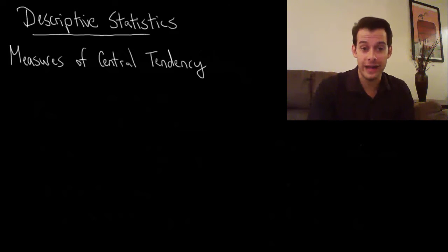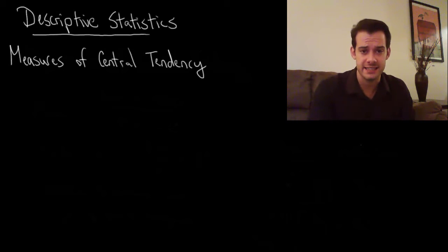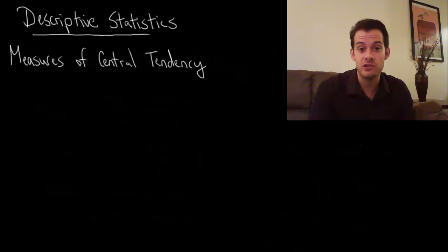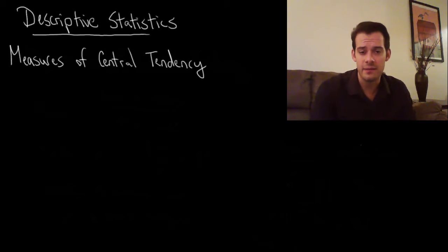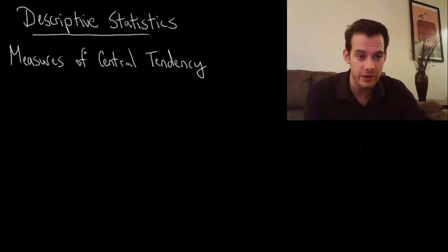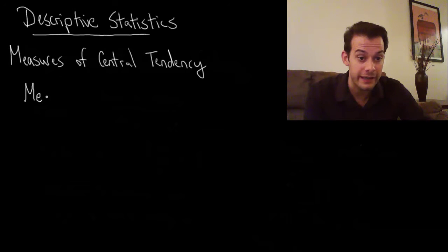Hi, I'm Michael Corayer and this is Psych Exam Review. In this video I'm going to talk about descriptive statistics — statistics that simply describe the data that we've collected. We're going to look at three measures of central tendency, which are three different types of statistics that tell us about the central tendency of our data. The first of these you're probably familiar with: the mean, or the average.